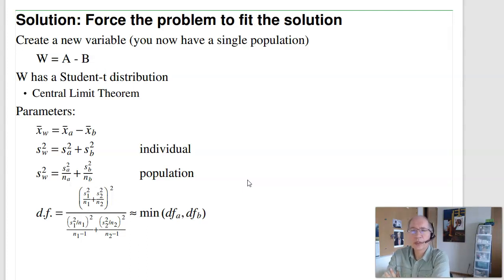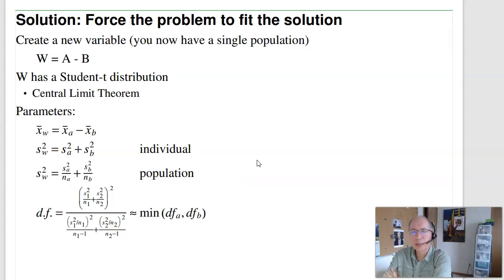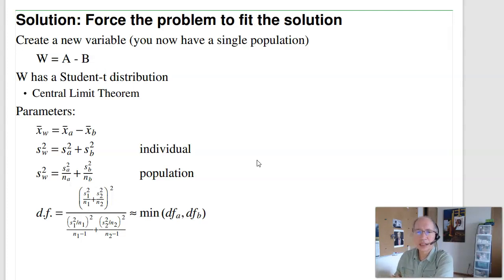W will have a normal distribution if you knew the mean and standard deviation. Since you don't know them and have to estimate them, W has a student t-distribution. The mean of W is just the mean of A minus the mean of B. The variance of W will be the sum of the two variances — you add, you don't subtract. If you subtracted, you could conceptually get a negative variance, which is nonsense.